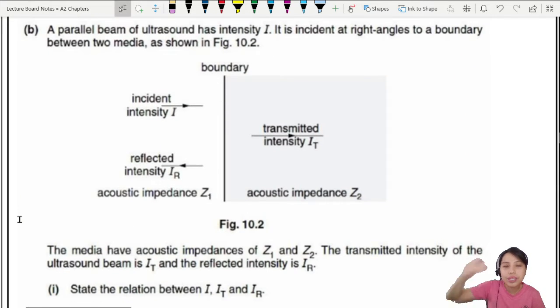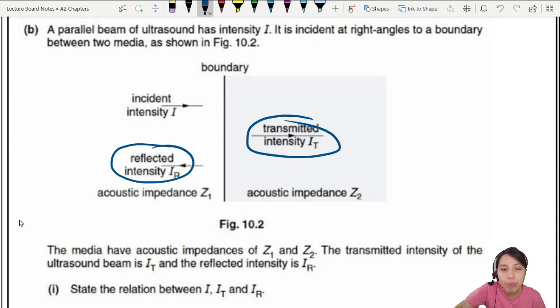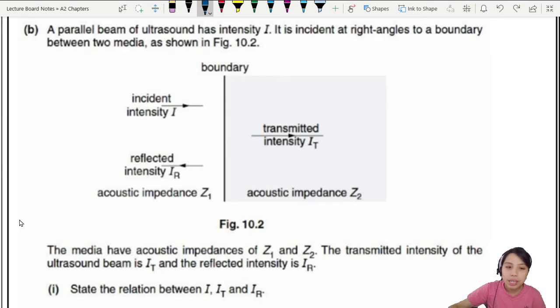Next one. Here we go to this. A parallel beam come in. So incident intensity is the one on the left side comes in. Right angle. So come in normal to the boundary between two media. So some amount is going to be transmitted. Some amount will be reflected back once you hit the boundary. So the media have acoustic impedance Z1, Z2.